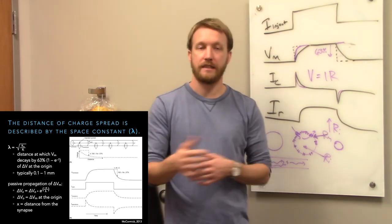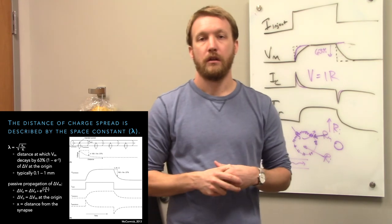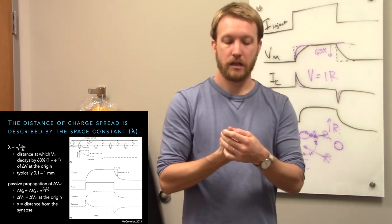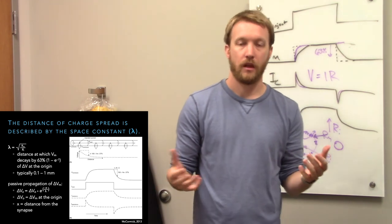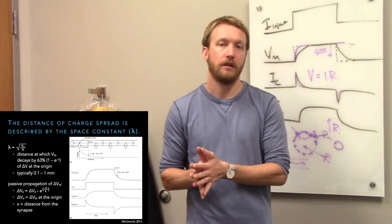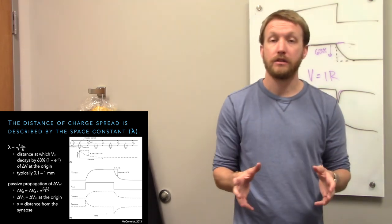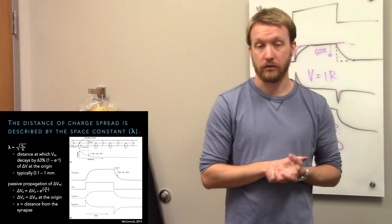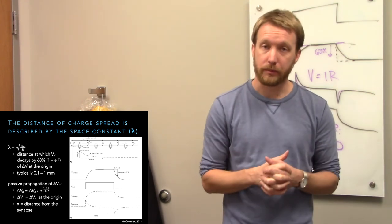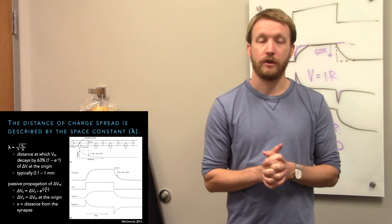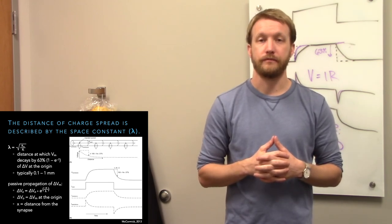So we have two key passive properties: the time constant (tau) and the space constant (lambda), which affect charge movement without considering active conductances. Active conductances are very important to neurons and will be the topic of the next lecture. If you have any questions on the passive properties of membranes, fill out the questions box and we'll get to it when we meet. See you later.